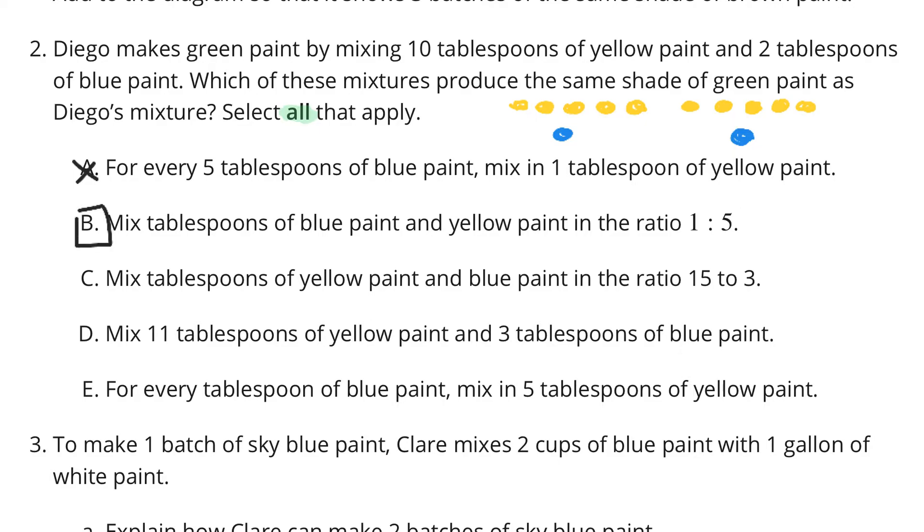C. Mix tablespoons of yellow paint and blue paint in the ratio of 15 to three. We've established that it's okay to have five yellow to one blue. Is it possible to do 15 to three? Yes, because as you go from five to one to 15 to three, you're multiplying by three. So, C is a solution as well.